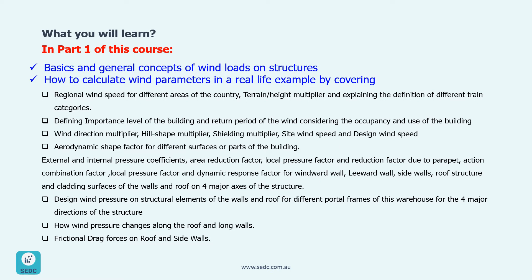These wind parameters include regional wind speed for different areas of the country, terrain or height multiplier and the definition of different terrain categories, importance level of buildings and return period of the wind event considering the occupancy and use of the building, wind direction multiplier, hill shape and shielding multipliers, site wind speed and design wind speed. I will also explain the aerodynamic shape factor for different surfaces or parts of the building. Calculating aerodynamic shape factor requires calculating the external and internal pressure coefficients, area reduction factor, local pressure factor, action combination factor, permeable cladding factor and dynamic response factor.